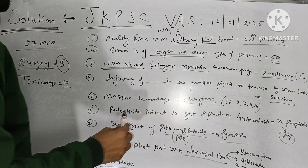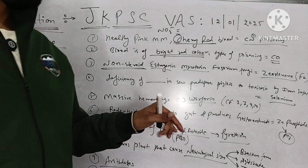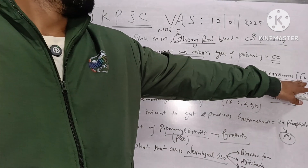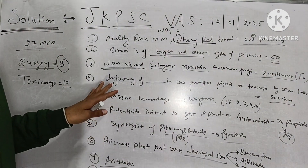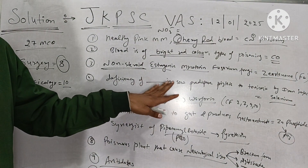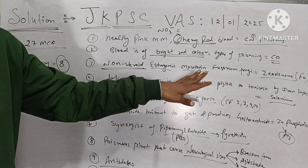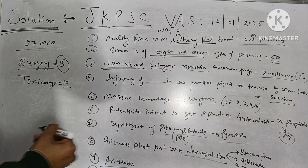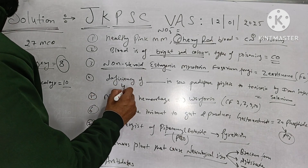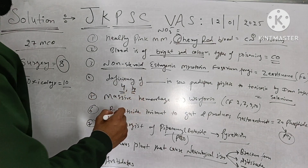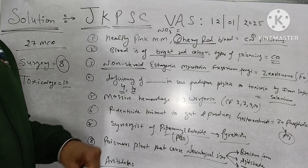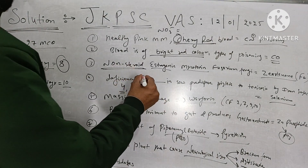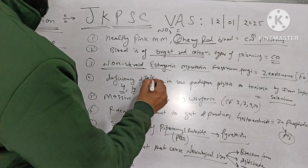A non-steroidal estrogenic compound and mycotoxin produced by the fungi Fusarium species is zearalenone, also known as F2 toxin. Deficiency of which element in a nursing sow predisposes their piglets to toxicosis by iron injection? Iron injections are given on day 4 and day 14 to piglets.